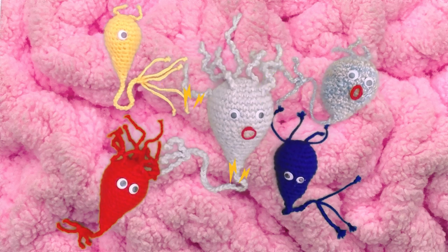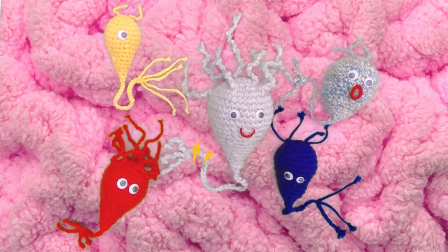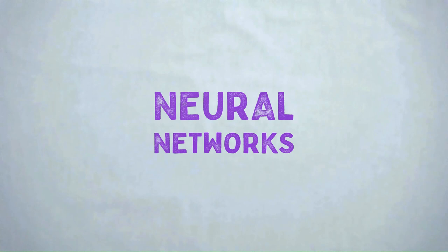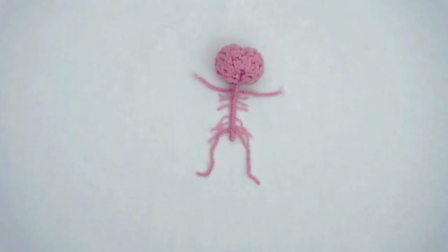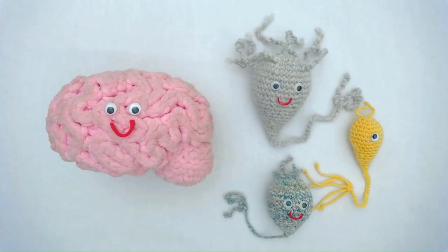Groups of neurons that send messages to each other are called neural networks. There are neurons in your body too, spread from your head to your toes, sending messages around your nervous system.